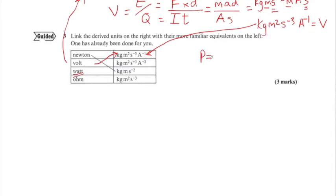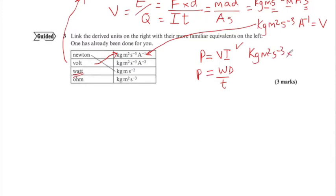The watt, which is power, can be defined as voltage times current, or work done divided by time. We'll use voltage times current. We know that voltage is kg·m²·s⁻³·A⁻¹. Multiplying by current, times A, the A⁻¹ and A cancel each other out. So the unit of power is kg·m²·s⁻³, which is that answer. The watt goes there.